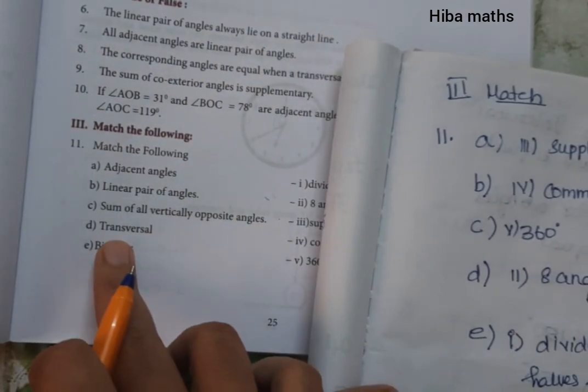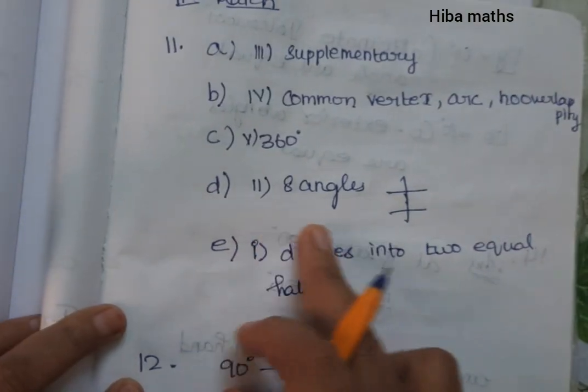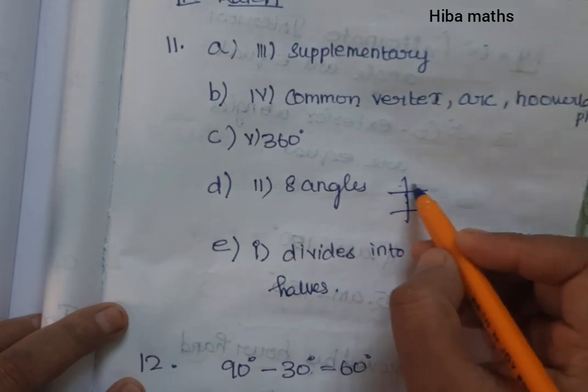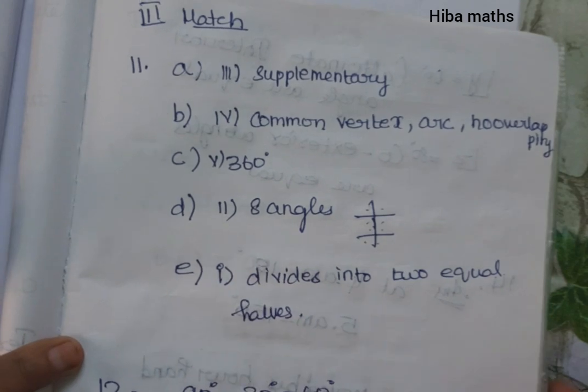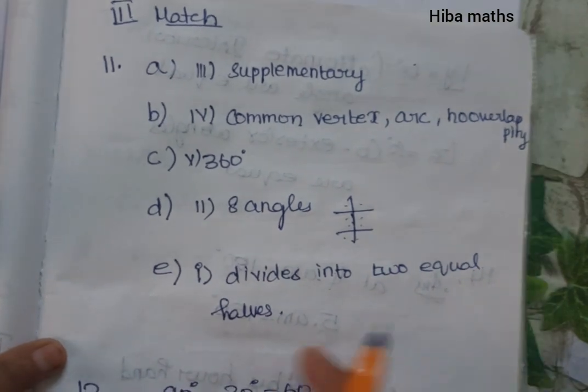A transversal creates 8 angles. These are numbered 1, 2, 3, 4, 5, 6, 7, and 8. A bisector divides an angle into 2 equal halves.